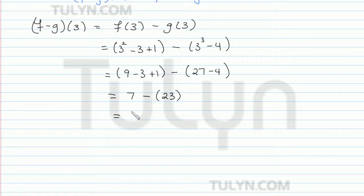And then doing the last step of simplification, we end up getting negative 16. So in conclusion, f minus g of 3 is equal to negative 16.